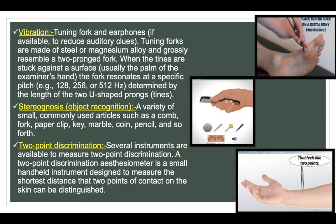For vibration testing, a tuning fork and earphones (if available to reduce auditory cues) are used. Tuning forks are made of steel or magnesium alloy and resemble a two-pronged fork. When the tines are struck against a surface — usually the palm of the examiner's hand — the fork resonates at a specific pitch, e.g., 128, 256 or 512 Hz, determined by the length of the two U-shaped prongs or tines.